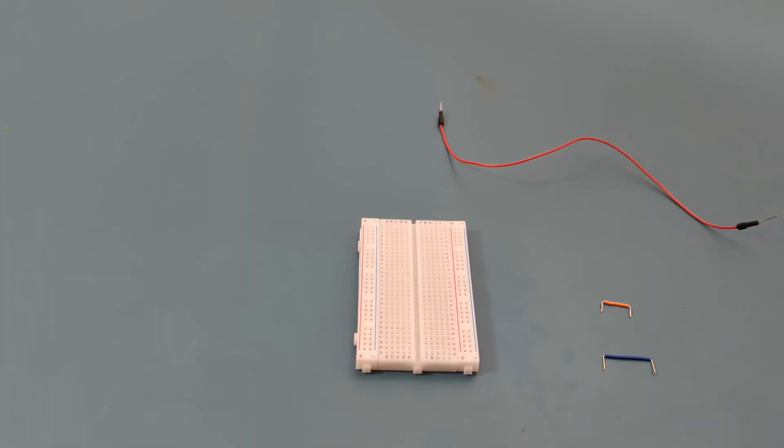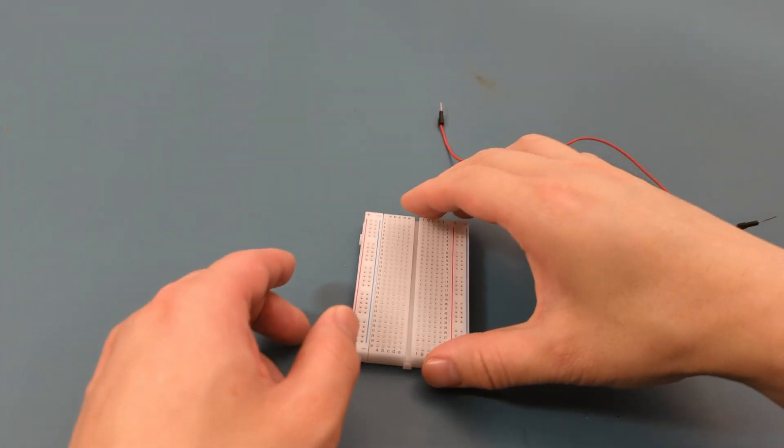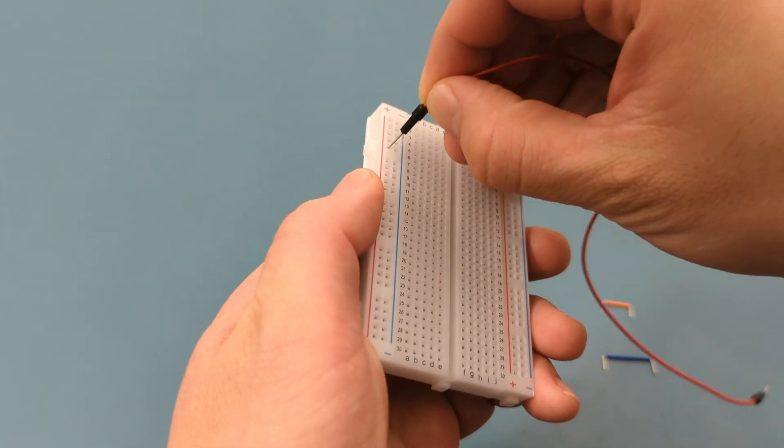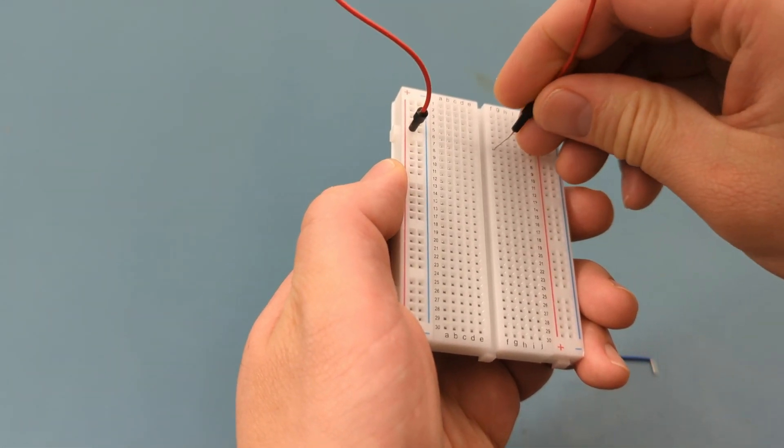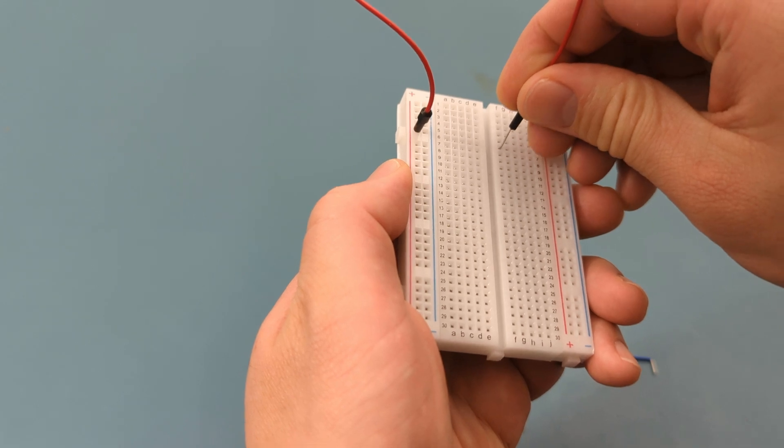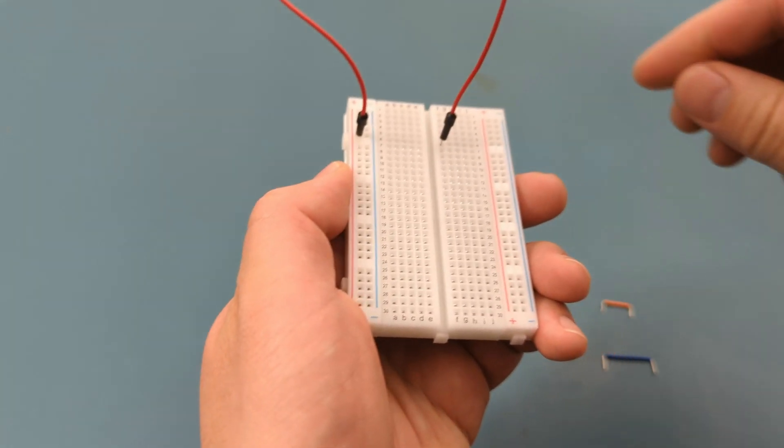Try to keep your circuit neat by using jumper wires of appropriate lengths. This will help you troubleshoot and make modifications more easily. Whether you're building a simple LED circuit or working on more complex projects, a breadboard is your best friend.